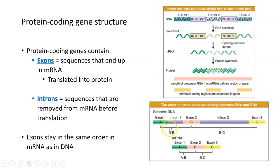When talking about exons and introns, even though we remove the introns from the final gene product, the exons stay in the same order. So exon one, two, and three, even after removal of introns one and two, remain in the same order: one, two, and three.